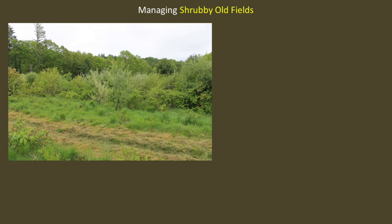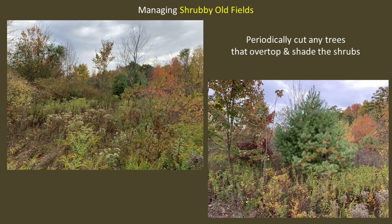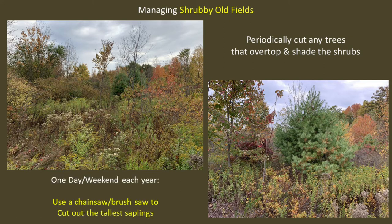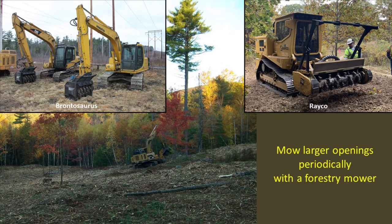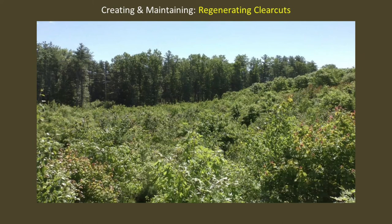Creating shrubby old fields is accomplished by simply allowing shrubs and saplings to grow up into a field naturally. Once shrubs are established, you don't really need to ever cut the shrub species, but eventually you will need to periodically cut individual trees that begin to overtop and shade out the shrubs. In a small shrubland, this can be done using a chainsaw or brush saw, which is basically a weed whacker with a saw blade. You basically schedule one day or weekend each year to cut out all of the tallest saplings. In larger openings, we typically use a brontosaurus or a raco-style forestry mower to mow the trees about once every seven to ten years. This opening in the photo was mowed flat because it was an overgrown clear cut that was all tree stump sprouts and few shrub species, but usually we have these mowers mow around any shrubs.